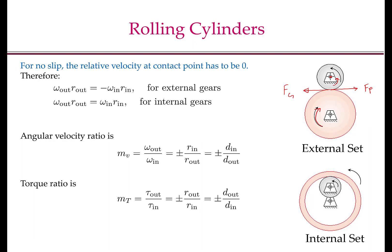For the internal set, the contact point on the bigger gear tends to move towards the left because the gear is rotating in the anticlockwise direction. So the friction force Fg on the bigger cylinder at the contact point acts in that direction, and the reaction force Fp on the smaller cylinder acts towards the left. This force Fp creates a moment about the center in the counterclockwise direction, making the smaller cylinder move counterclockwise. This explains why for an internal set, both shafts rotate in the same direction.